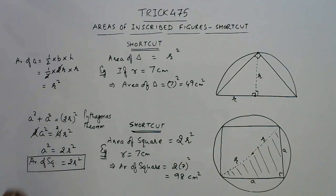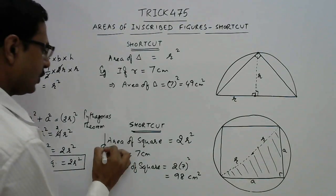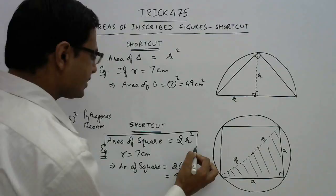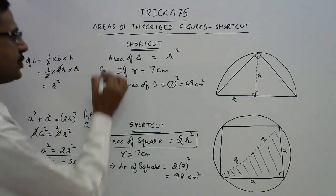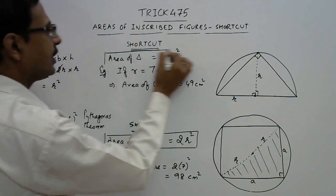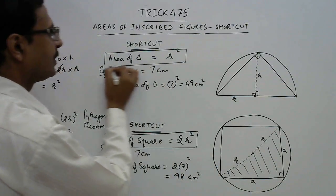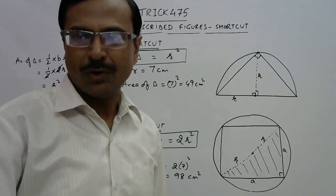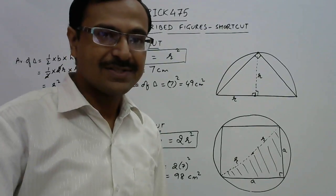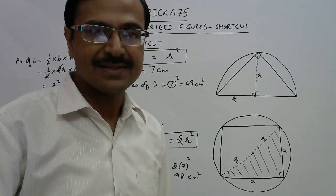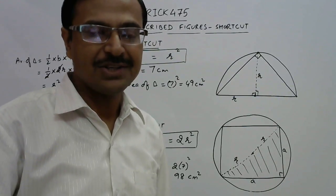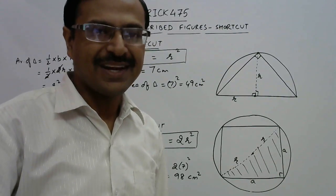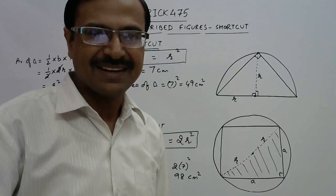So these two shortcuts — area of triangle inscribed in a semicircle = r², and area of square inscribed in a circle = 2r² — are very important shortcuts for competitive exams. Please look for more shortcuts on the channel, watch this video twice to understand, and if you like it, do share and subscribe.